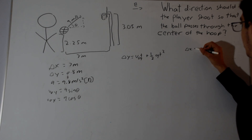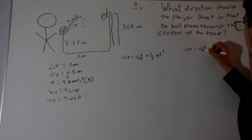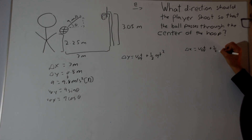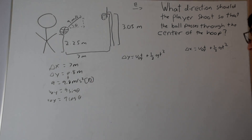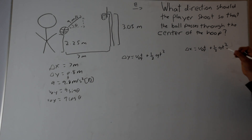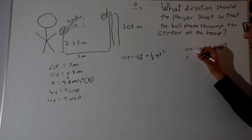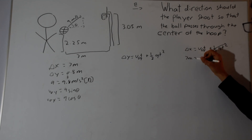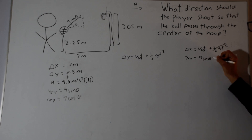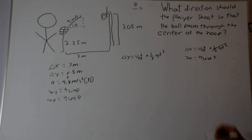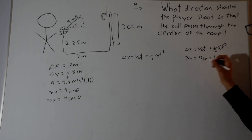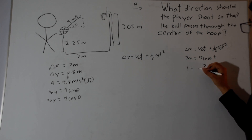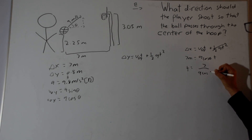For the horizontal direction: Δx = v0x·t + ½a·t². The horizontal acceleration is zero because gravity only acts downwards, so that term drops out. We're left with 7 meters equals 9 cos θ times time, where 9 cos θ is the horizontal initial velocity. Isolating for time gives t = 7 / (9 cos θ).